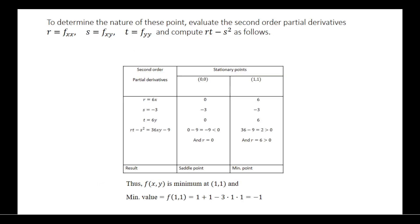Now we will find out the second order partial derivatives and evaluate the values of r, s, t as well as rt minus s squared. The r value is 6x, s value is minus 3, and t value is 6y. The rt minus s squared value is 36xy minus 9.